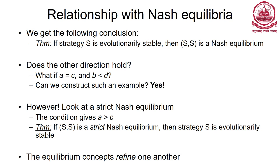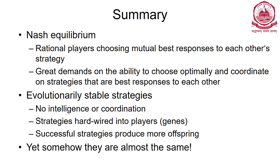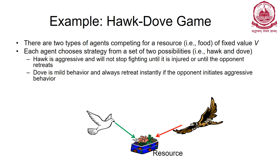So the relation in reverse is not true. For strict Nash equilibrium, where a > c strictly: if (s, s) is a strict Nash equilibrium then strategy s is evolutionary stable. Only in the non-strict case where a = c do we encounter problems. To summarize: Nash equilibrium requires rational players choosing mutually best responses - it makes great demands on the ability to choose optimally. Evolutionary stable strategy requires no intelligence and no coordination; strategies are determined by genes and hardwired into players.